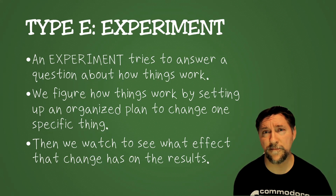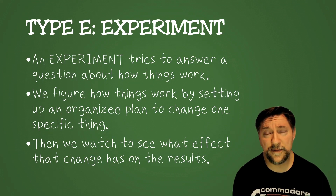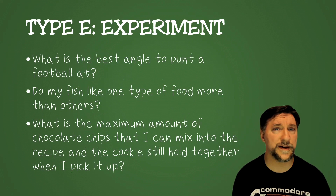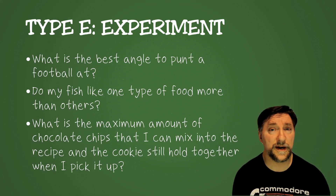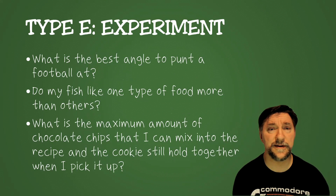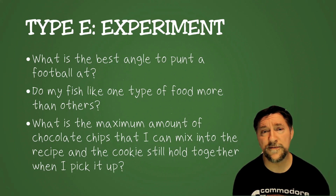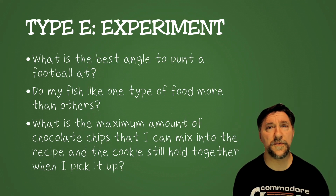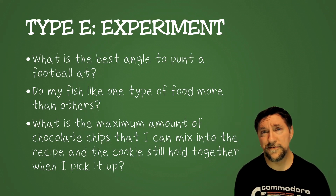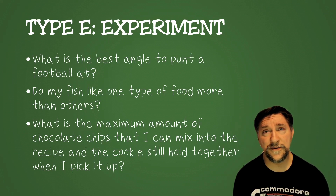It's a simplified approach compared to what a scientist does for their day job, but at the heart you're doing the same thing — picking something, changing it in specific ways, and seeing what impact that has. And it can look a lot of different ways. You can do something on sports — like what's the best angle to punt a football. You can have projects with your pets — do my fish like one type of food more than another? You can even do it with baking — what's the maximum number of chocolate chips you can cram into a recipe without the cookie falling apart?